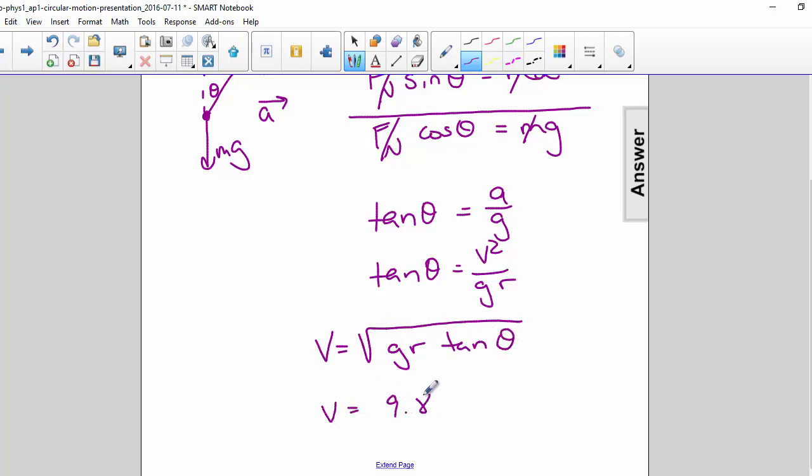g is 9.8, r is 250, and theta is 15 degrees.